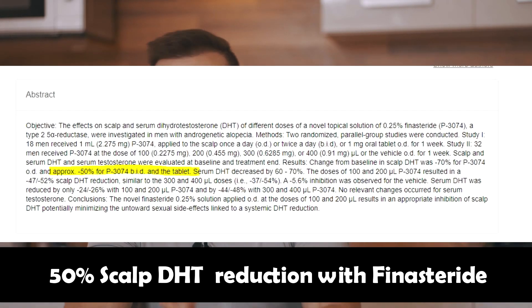Finasteride is an anti-androgen which restricts your body's selective tissues — like skin, prostate, liver, and hair follicle — from producing DHT. It does that by blocking type 2 5-alpha reductase, thus allowing less testosterone to be converted into DHT. This results in roughly 70% lower plasma and tissue DHT concentrations and about 40 to 50% lower scalp DHT concentration with long-term use, meaning less DHT affects the hair follicle.